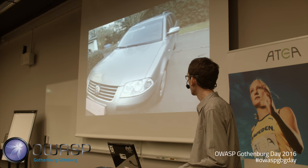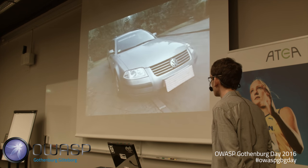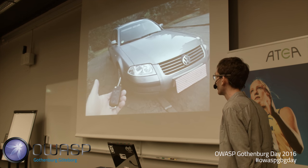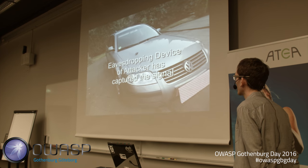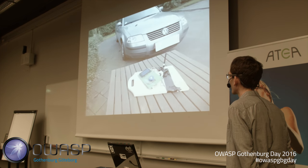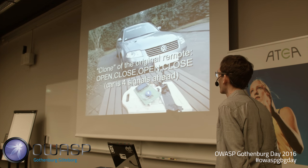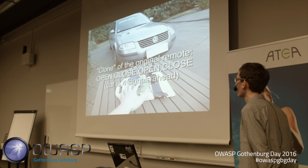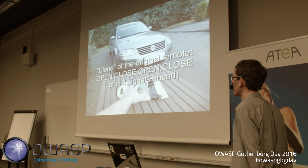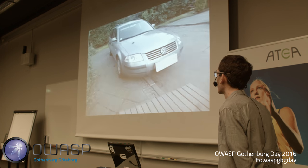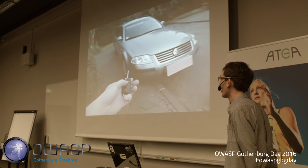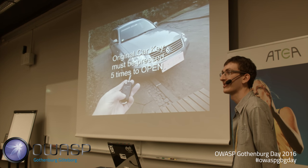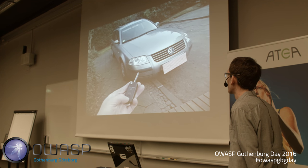There's a video demonstration on a Volkswagen car. First the owner opens and then closes the car, while a device nearby eavesdrops and generates the next rolling codes — cycling open, close, open, close. This means the counter increases by four. When the owner tries to use the real remote, the first four button presses do nothing because the car checks the counter, and the fifth press finally works.